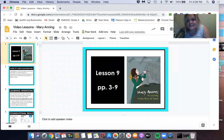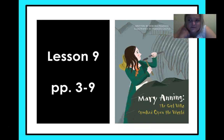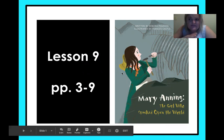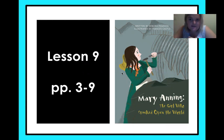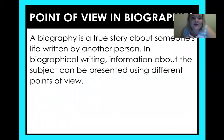Just by looking at this picture, I can tell this is not a story taking place right now. I'm sure you fourth graders can figure it out too — looking at what Mary is wearing, I know this story must have taken place a little bit ago, like in the past. This is also a biography. A biography is a true story, so Mary Anning is a real person, and this story about her life is written by another person. In biographical writing, information about the subject can be presented using different points of view.